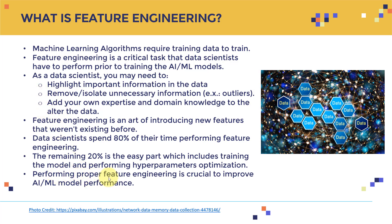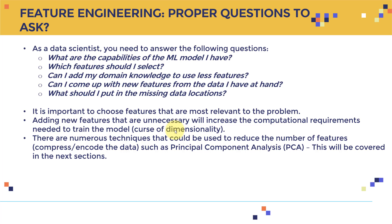Performing proper feature engineering is crucial to improve AI/ML model performance. As a data scientist, you need to answer the following questions: What are the capabilities of the machine learning model I have? Which features should I select? Can I add domain knowledge to use fewer features — for example, dropping columns or deriving new ones? Can I come up with new features from the data at hand? And finally, what should I put in the missing data locations? We cannot feed a model with missing data — you need to fill it in first, then train your model.